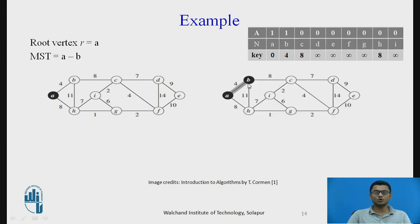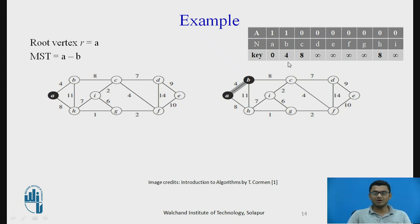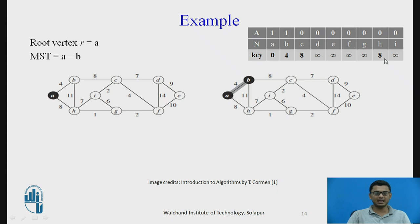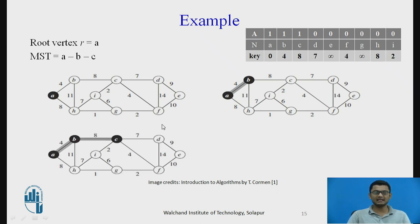We include node B in the visited set and add it to the MST, marking it as visited. All nodes adjacent to B are updated — node C gets a key value of 8. Now we must select the lowest key value among the unvisited nodes. Since C and H are both 8, we can choose either; we select C.